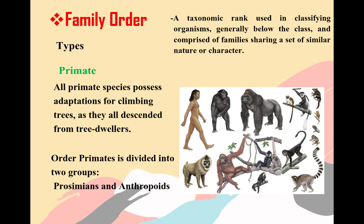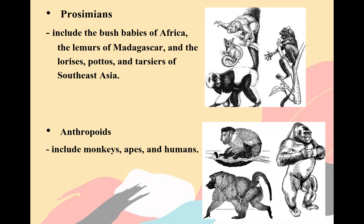Family order is a taxonomic rank used in classifying organisms, generally below the class, and comprised of families sharing a set of similar nature or character. An example is the order Primates. All primate species possess adaptations for climbing trees, as they all descended from tree dwellers. Other primates are divided into two groups: the prosimians and the anthropoids. Prosimians include the bush babies of Africa, the lemurs of Madagascar, and the lorises, pottos, and tarsiers of Southeast Asia. Anthropoids include monkeys, apes, and humans.